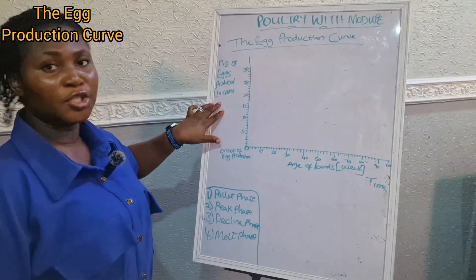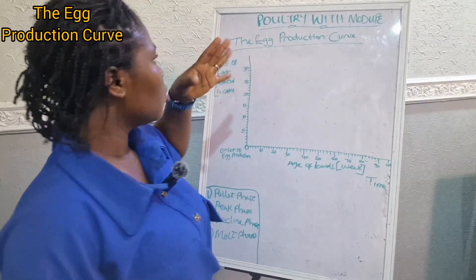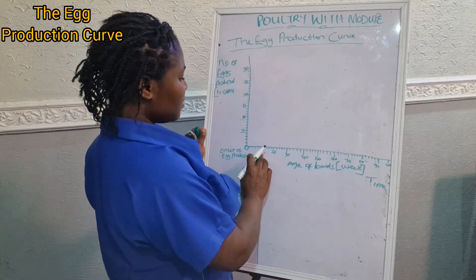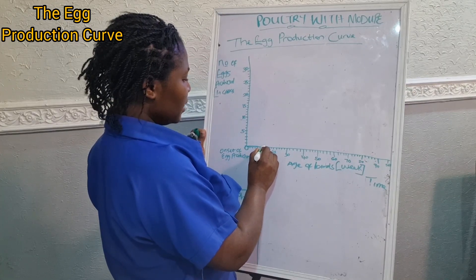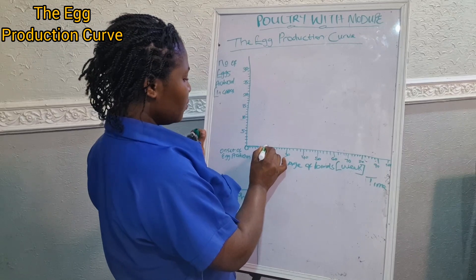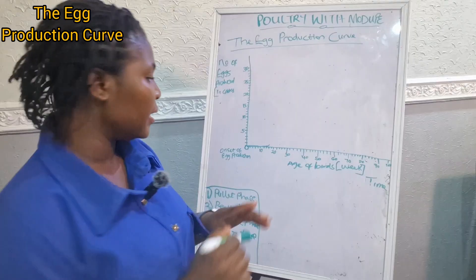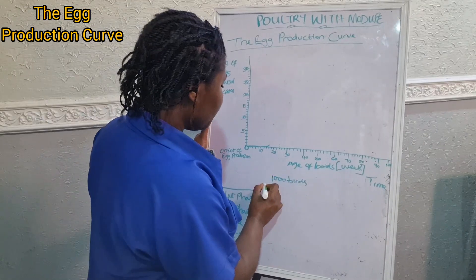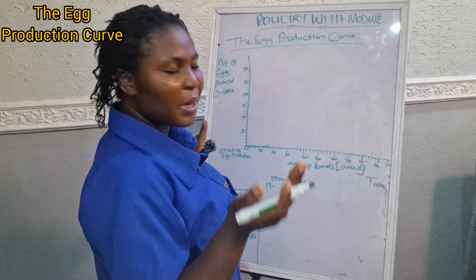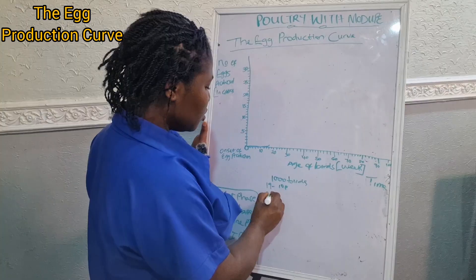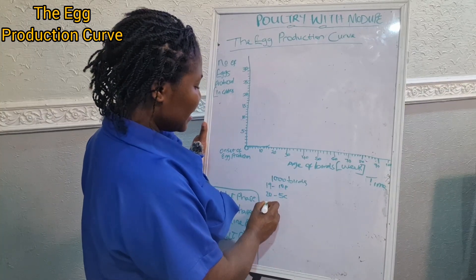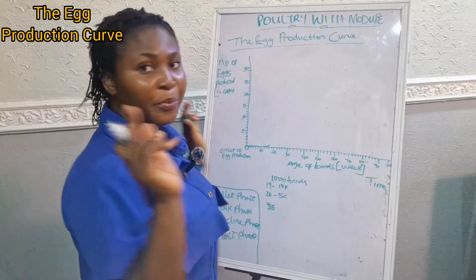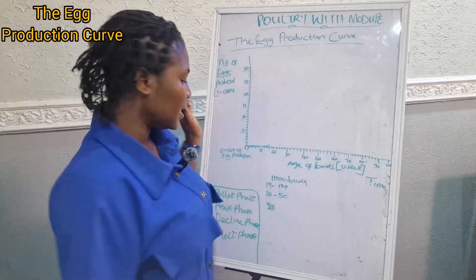What I'm plotting here is the number of eggs produced in crates on one axis and the age of the birds in weeks on the other axis — so we're plotting number of eggs produced against time, against the age of the birds. At the onset of production, egg production would not start immediately. Let's say egg production starts at 18 weeks, and we're working with 1000 birds here.